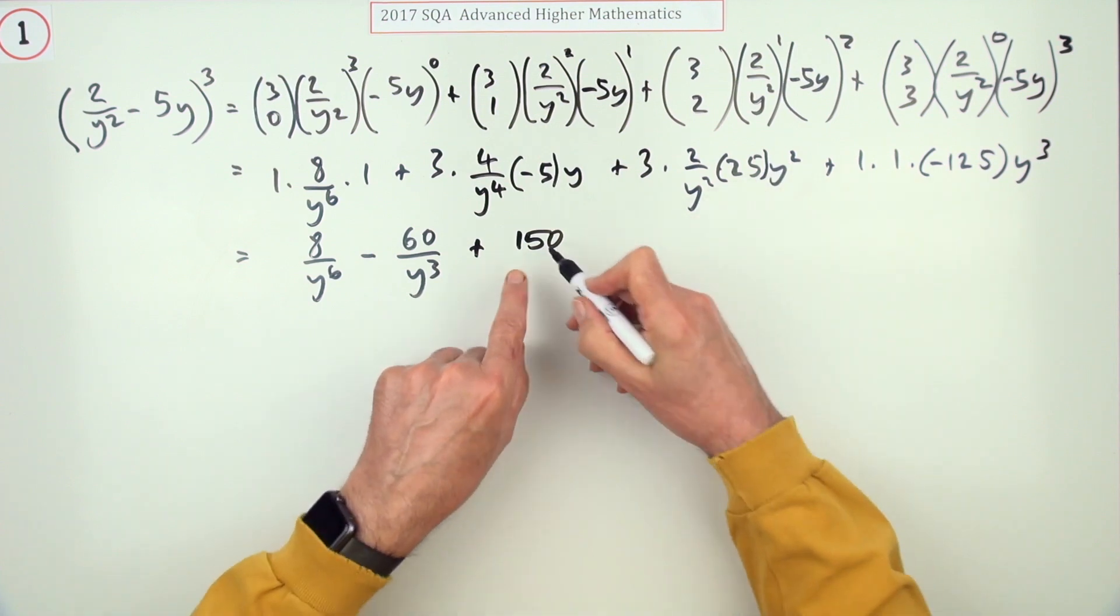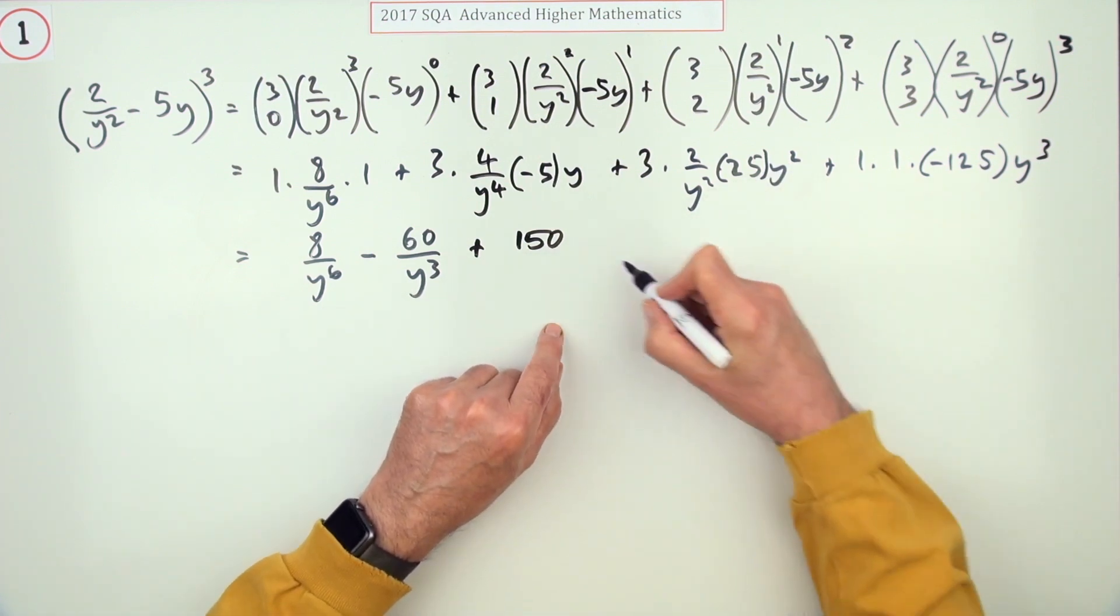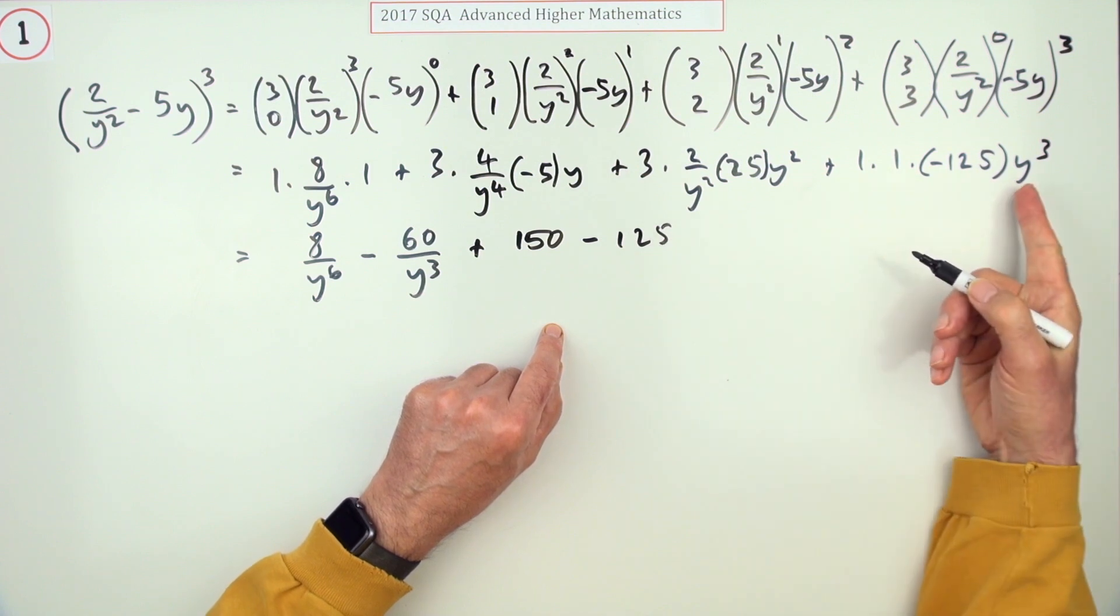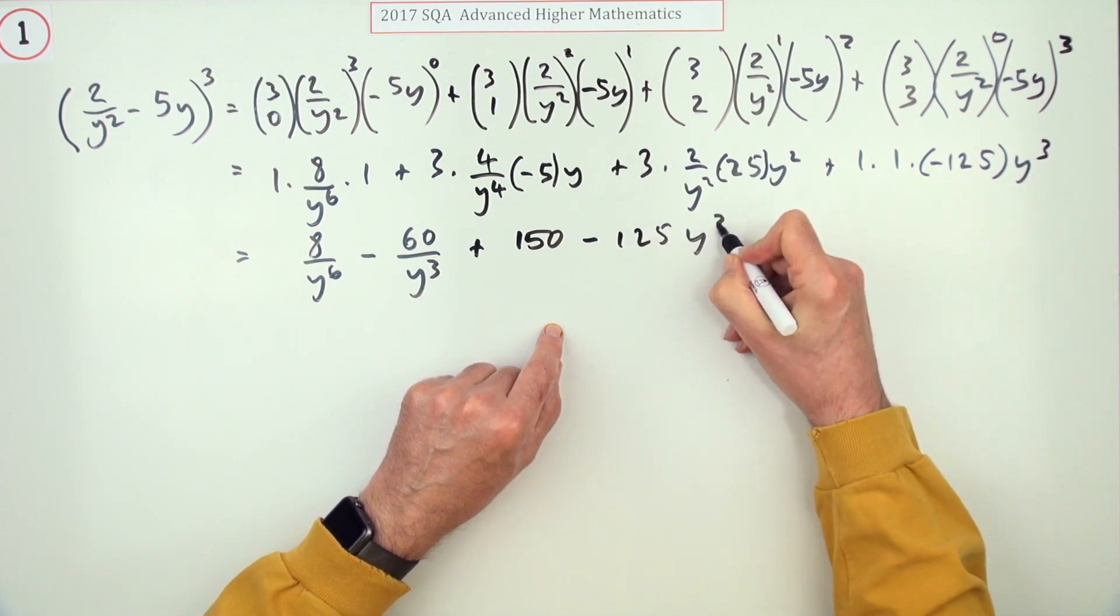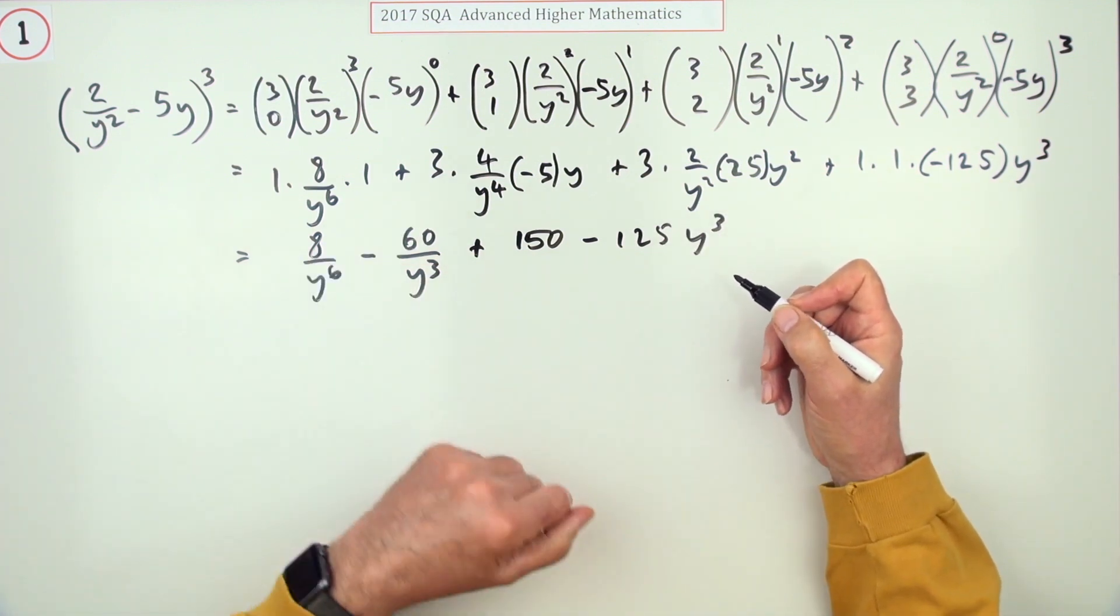Next one's gone back positive—that's 150—but the y term has gone now because it's power zero, so it's just 150. And finally it's just minus 125, and of course that's now y to the three, because when I was saying that pattern from underneath, of course...